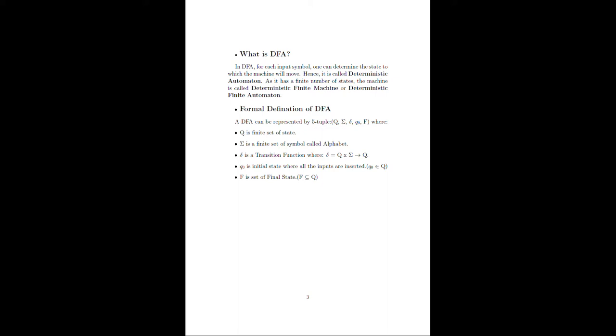Hence we call it the Deterministic Finite Automata. Now moving toward a formal definition of DFA, each DFA can be represented by five tuples: Q, Sigma, Delta, Q₀, and F, where Q is a finite set of states, Sigma is a finite set of symbols called alphabets, Delta is a transition function, Q₀ is the initial state, and F is a final state.